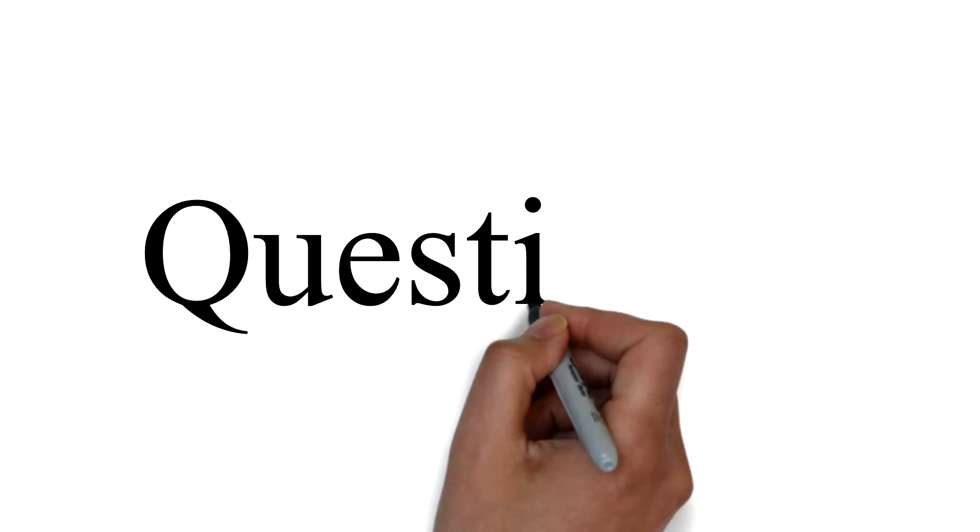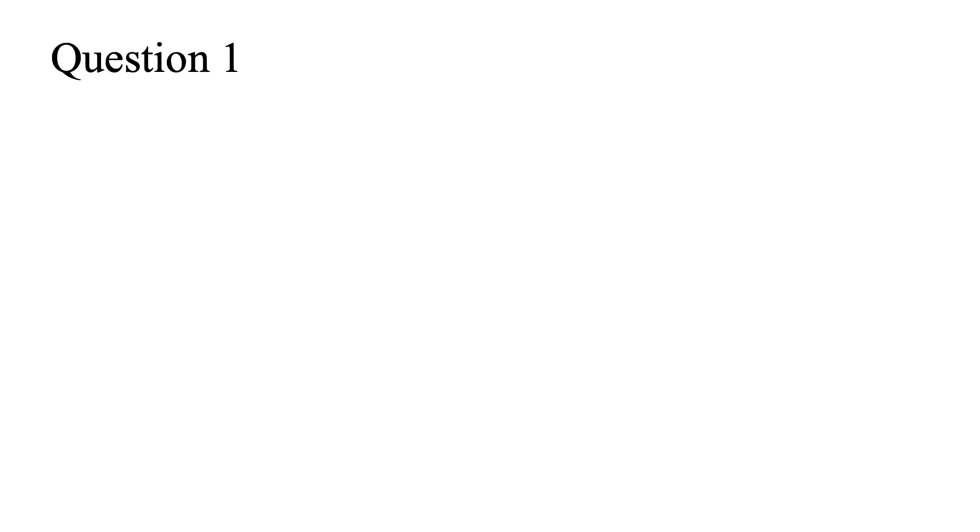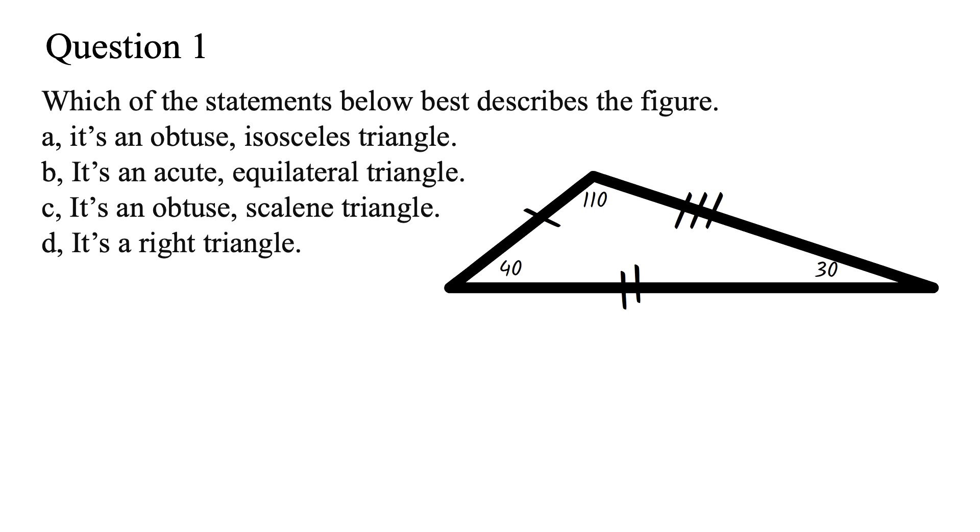Question 1. Which of the statements below best describes the figure? A. It's an obtuse, isosceles triangle. B. It's an acute equilateral triangle. C. It's an obtuse, scalene triangle. D. It's a right triangle.